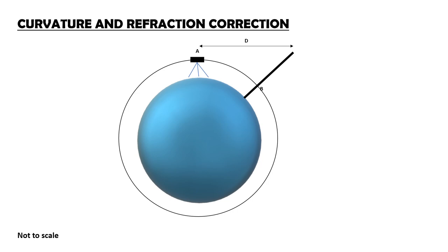At P, you can see the level surface intersects the leveling staff and here you are supposed to take the staff reading. But as line of sight is a straight line, you could observe leveling staff only at C. Hence, the segment BC is the error to be deducted.